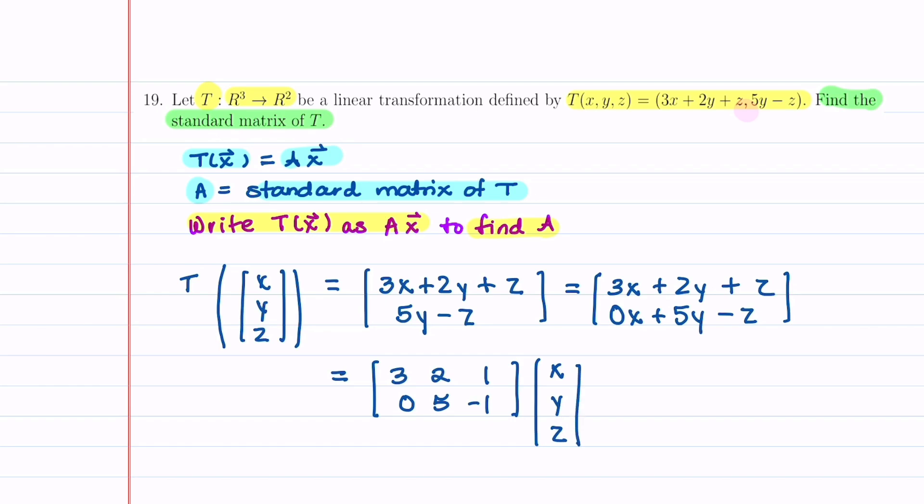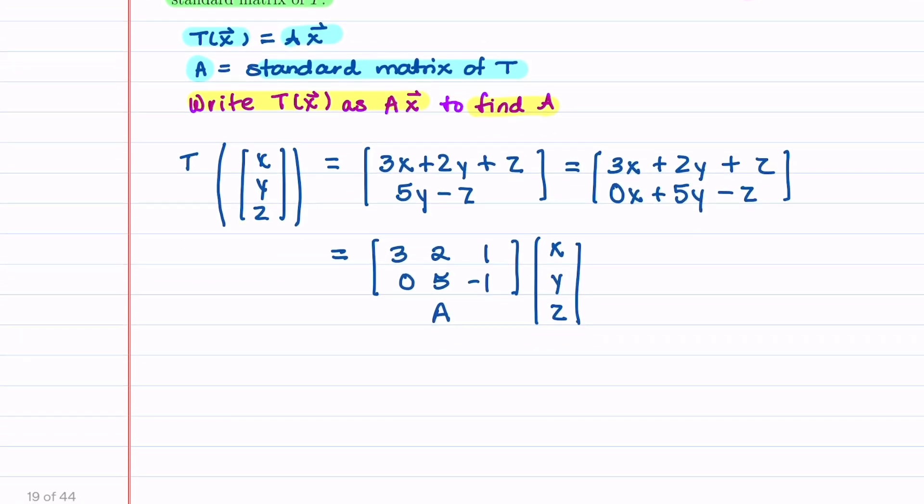What we were asked to find in this problem is the standard matrix of T. So that is matrix A. So we can write down that the standard matrix of T is this matrix right here, 3, 2, 1, 0, 5, and minus 1.